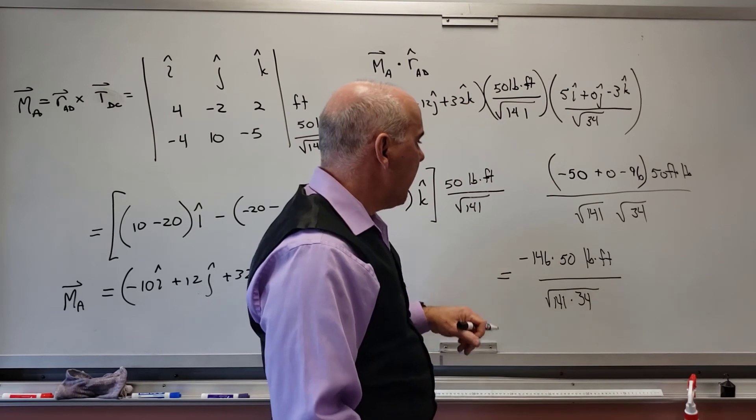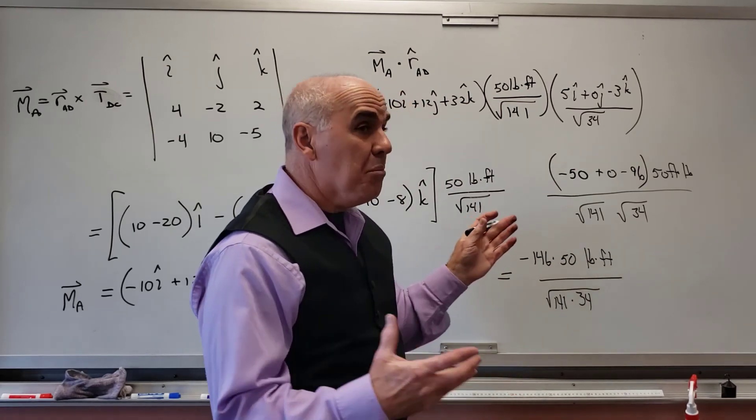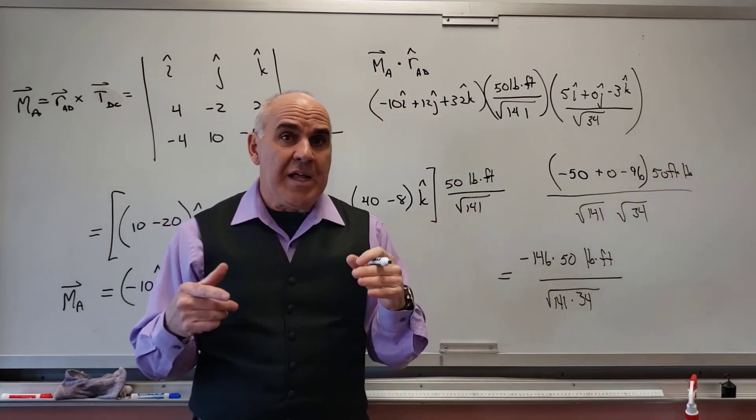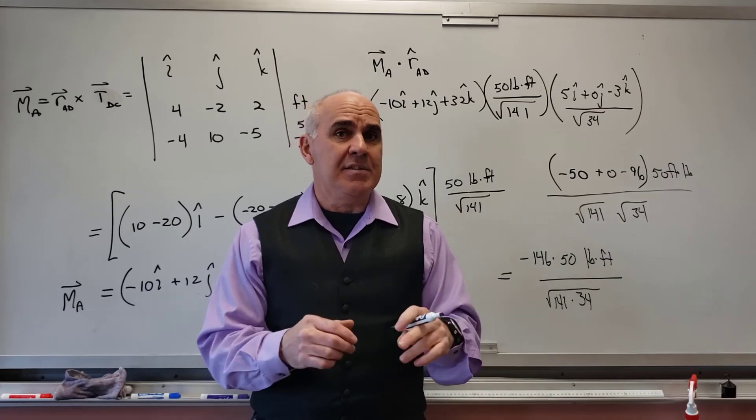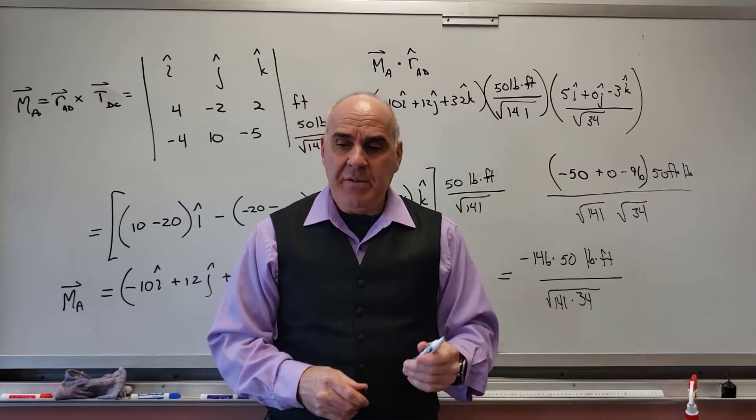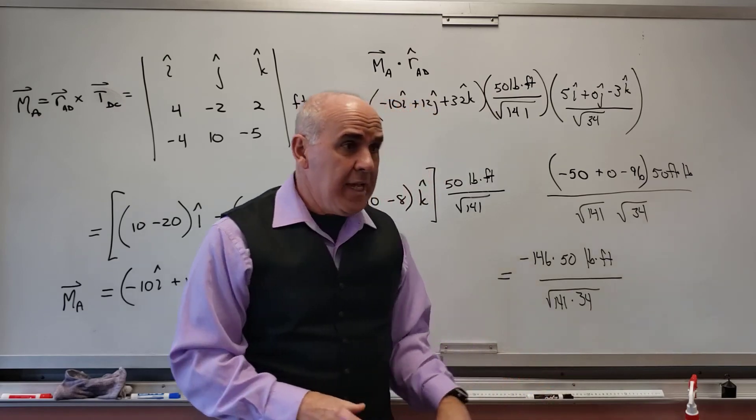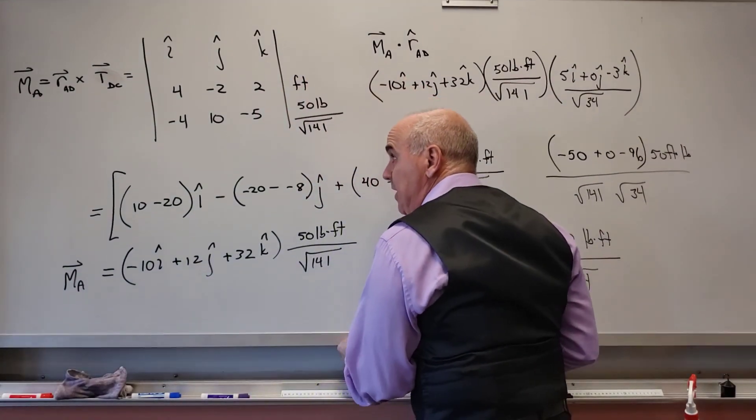All over, I'm not going to multiply that out, but it's the square root of 141 times 34. And then whatever that is numerically. And that's the moment of that force about axis AB. And that's how you find that.